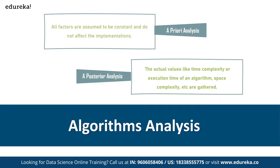Algorithm analysis is a very important factor. You can measure how well an algorithm performs in terms of speed as well as storage. Most of the time we measure execution speed, which is where worst case, best case, and average case analysis comes in. There are two techniques: a priori analysis, where all factors are assumed constant and don't affect the implementation, and posterior analysis, where we measure actual time complexity and space complexity — which is what we generally do in practice.